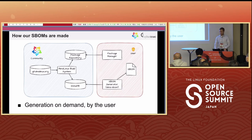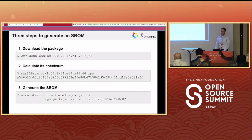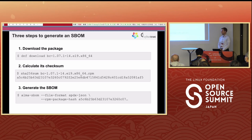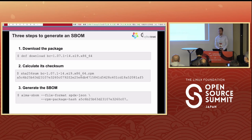The steps to generate an SBOM on the user side are relatively simple. First, download the package — or if you know the hash, you can skip that step. Then calculate the hash of the package and run the SBOM generator, telling it the hash of the package you want the SBOM for. You can specify SPDX in JSON, XML, or tag-value format, or you could request a CycloneDX SBOM.